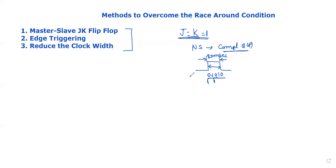The first method is to reduce the clock pulse width. For example, if the clock pulse is 20 milliseconds, we reduce it so that during the transition the state changes and the output remains stable and steady.